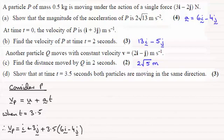And so what does this simplify to? Well that means that we've got the velocity of P is equal to, grouping up the I's, we've got I plus 3.5 times 6I. That's going to give us a total of 22I. And then we've got 3J minus 3.5 lots of minus 4J. So that comes to minus 11J.